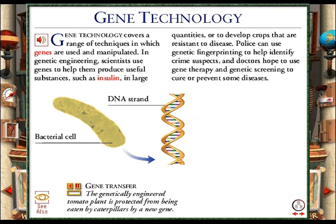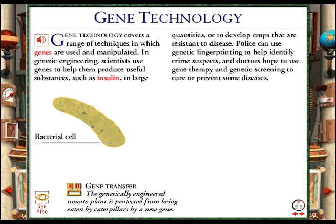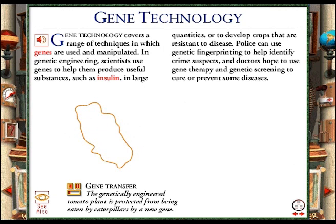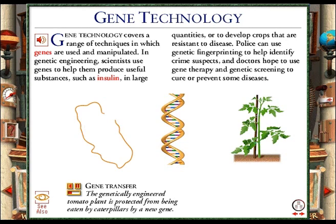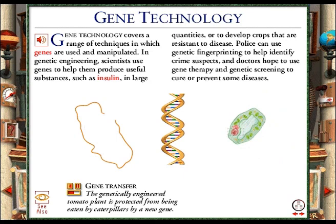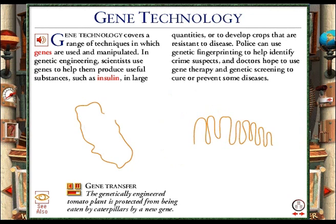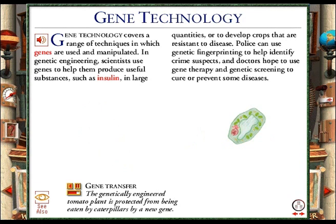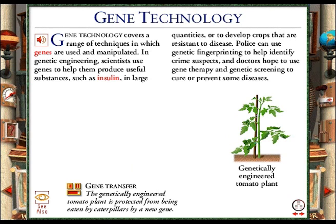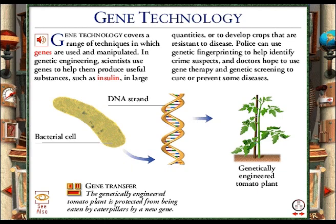Genetic engineering enables us to alter the way in which an organism develops by changing its genetic make-up. This is a bacterial cell. Inside the cell is a loop of DNA containing many genes. This gene controls the production of a substance that is poisonous to caterpillars. It is cut from the DNA strand by an enzyme. This is a normal tomato plant that is often attacked by caterpillars because it does not have a gene that enables it to make the caterpillar poison. This is one of its cells. Inside the nucleus of the cell is the plant's DNA. It is cut in two by another enzyme. The gene from the bacterial cell is then inserted into the DNA of the tomato plant and the DNA strand is replaced in the nucleus of the plant cell. A new tomato plant grows from the cell. This genetically engineered plant can make the caterpillar poison so it is protected from insect attack.